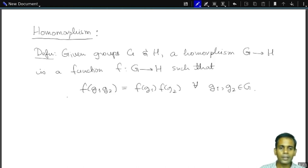So let us look at some basic properties of homomorphisms. The most fundamental property of a homomorphism is that it must take the identity of G to the identity of H. So F of identity of G is equal to identity of H. And why is this true?